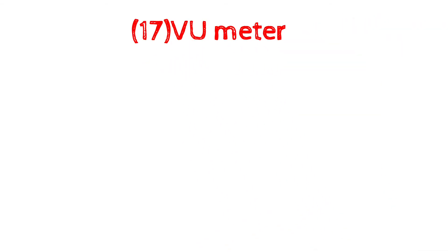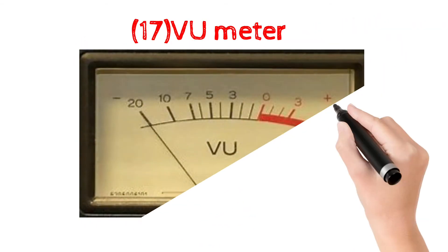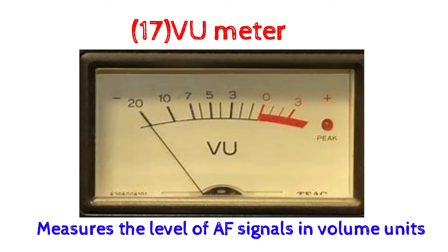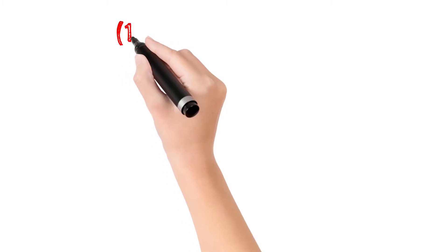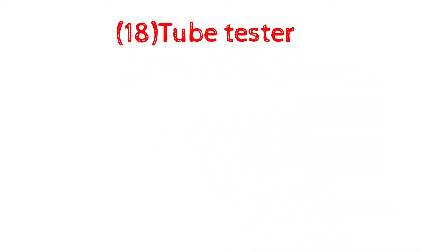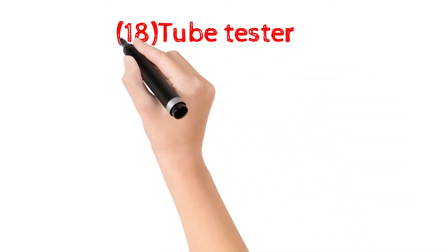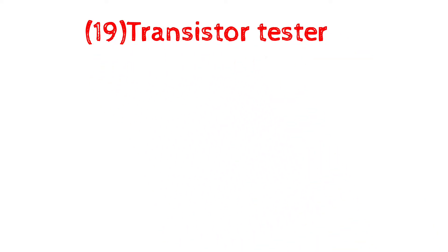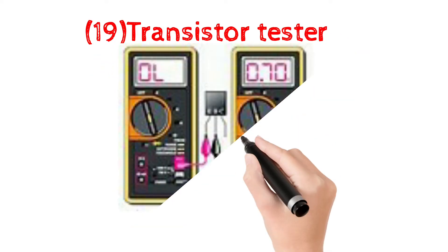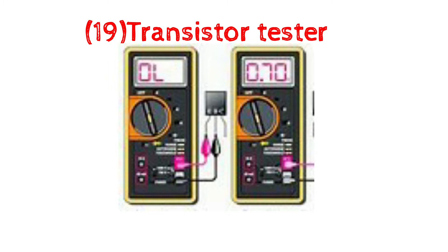17. VU meter: measures the level of an audio signal in volume units. 18. Tube tester: tests vacuum tubes — triode, tetrode, etc. 19. Transistor tester: tests transistors.